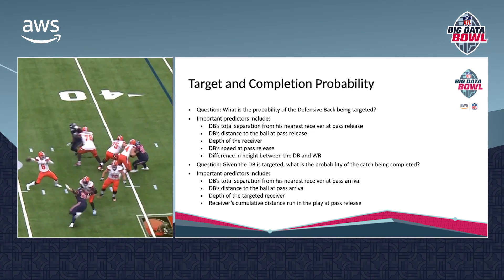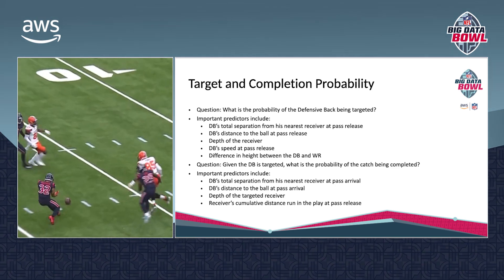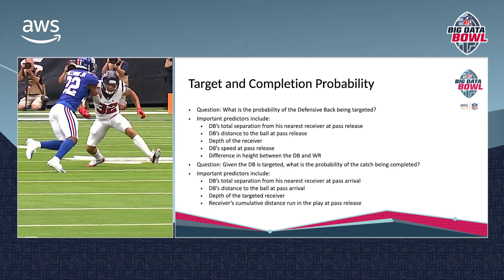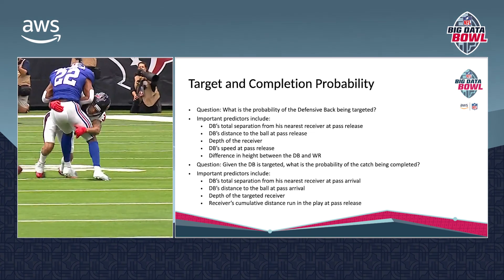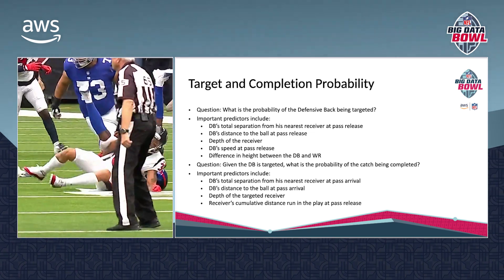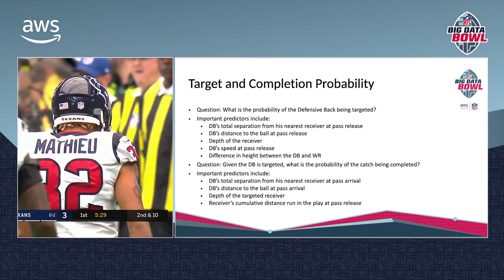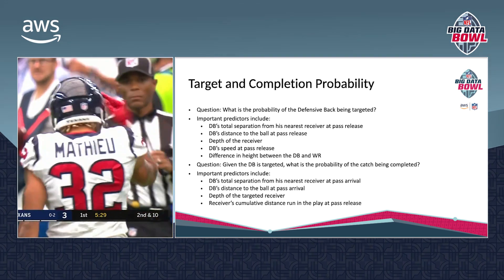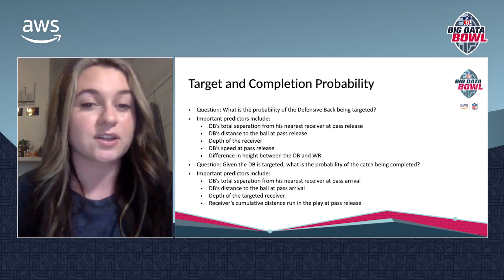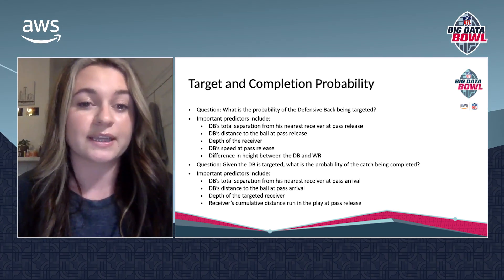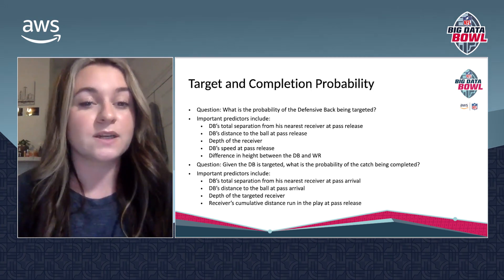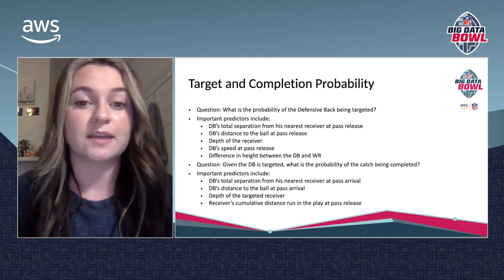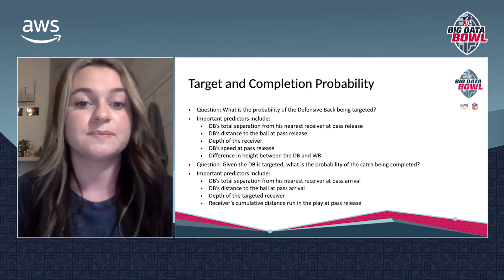In my target probability model, the question I aim to answer is: what is the probability of the defensive back being targeted in the first place? The important predictors include the defensive back's total separation from his nearest receiver at pass release, his distance to the ball at pass release, the depth of the receiver, the defensive back's speed at pass release, and the difference in height between the defensive back and the wide receiver.